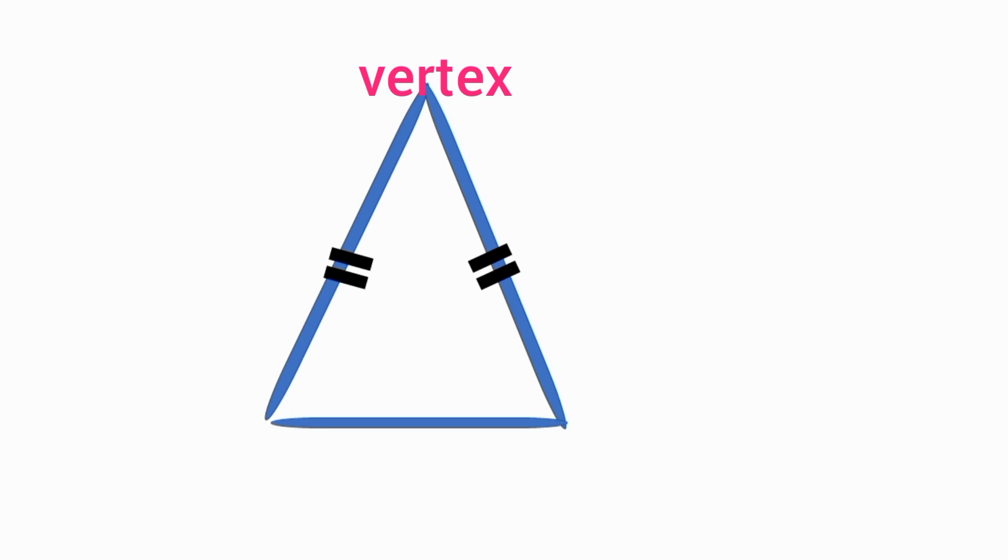Isosceles triangles are symmetrical, which means that if you were to fold the triangle in half along its base, the two halves would match perfectly.